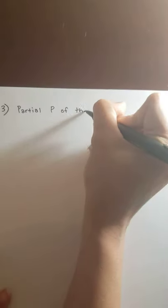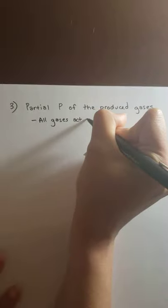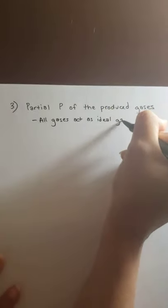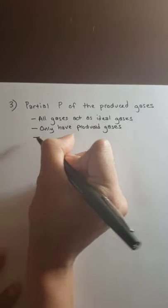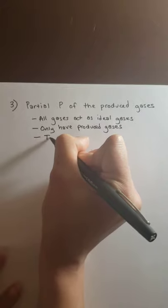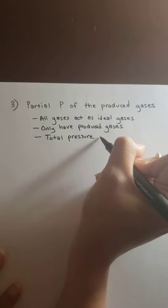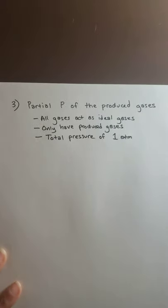The last part asks us to calculate the partial pressure of the produced gases. We make three assumptions: all gases act as ideal gases, only the produced gases are present in the headspace, and the total pressure of gases is one atmosphere.